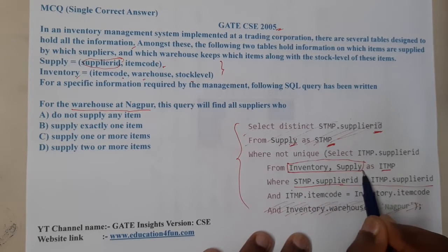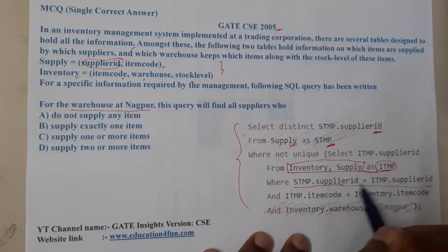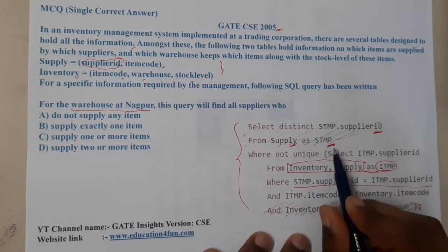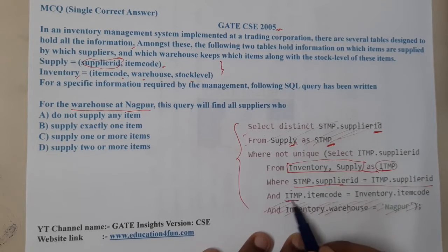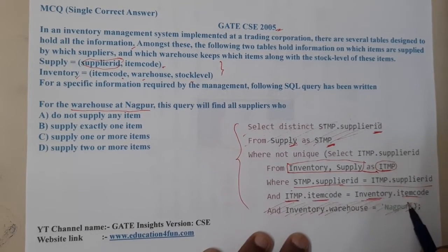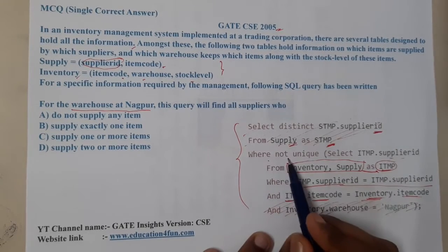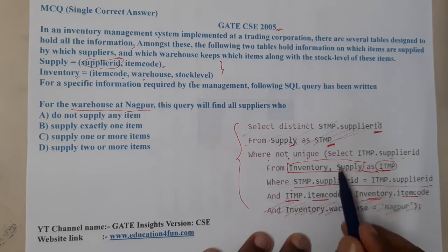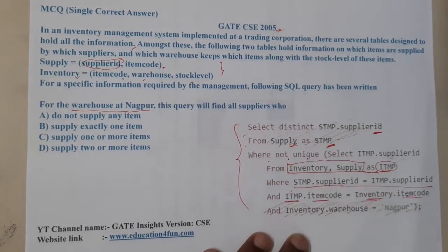So basically first we are performing a cartesian product between these two tables and naming that table itmp. Then we are performing the relation between this new table and the Supply table, checking whether itmp item code equals inventory item code. We are selecting all supplier IDs where NOT UNIQUE — meaning duplicates are available — and printing those items.